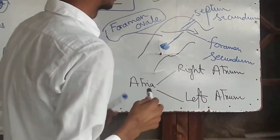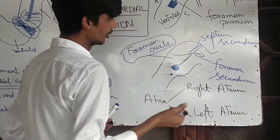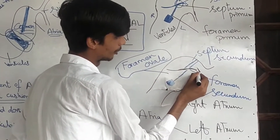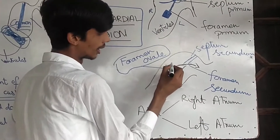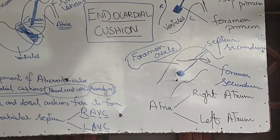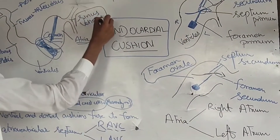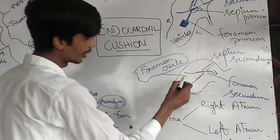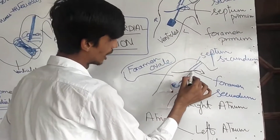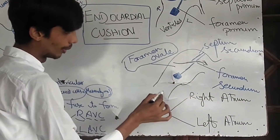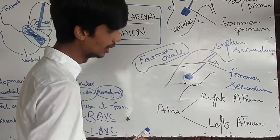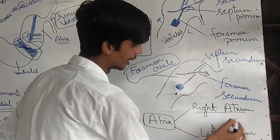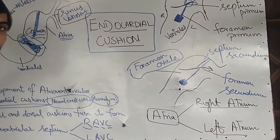During the embryonic period, blood from the right side moves towards the left side due to high pressure on the right. All veins entering the sinus venosus now enter the right atrium, and blood flows to the left atrium, then to the left ventricle, and then to all parts of the body. This completes the division of the primitive atrium into the right and left atria.